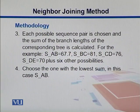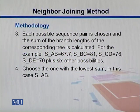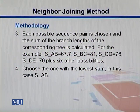We can calculate the possible sequence pairs and the sum of the branch lengths for corresponding trees. For example, the score between A and B can be calculated as 67.7. In the same way, we can come up with scores for B and C, C and D, D and E, and other possibilities.